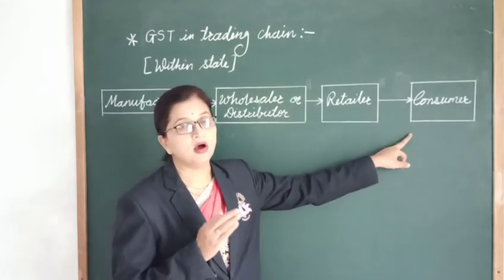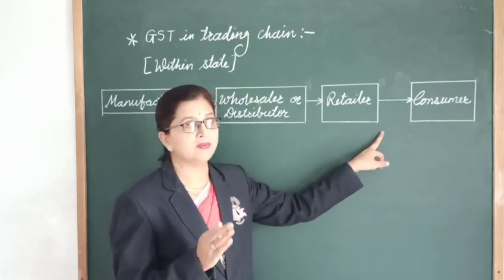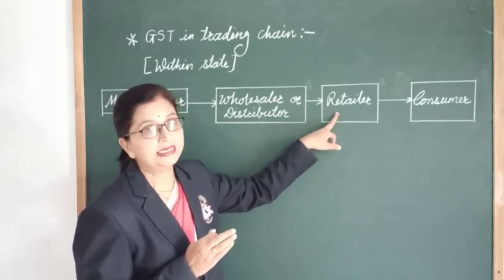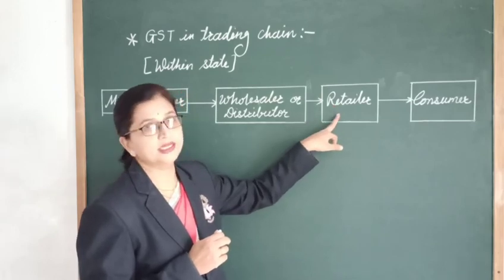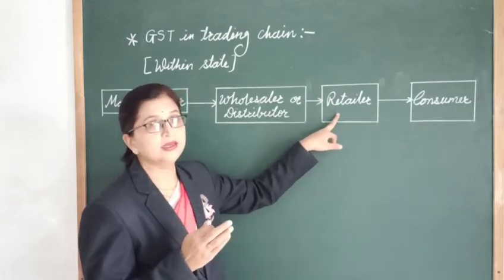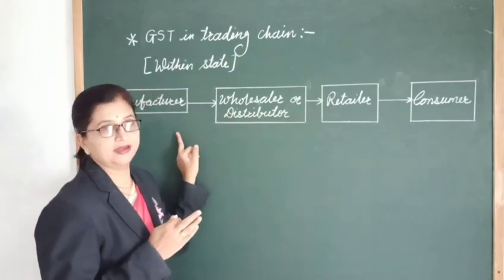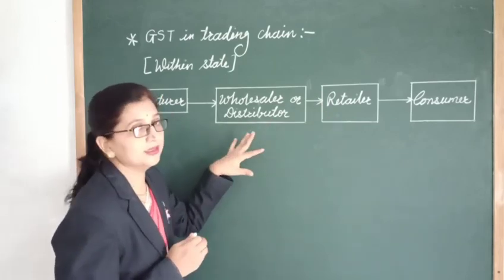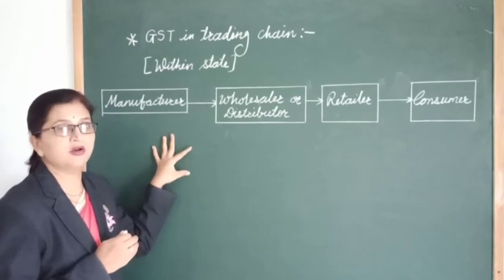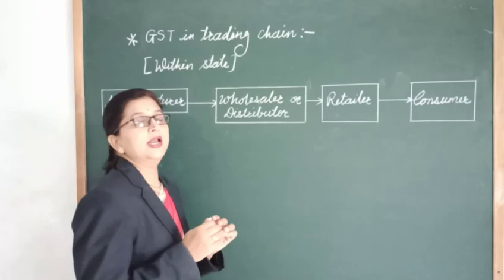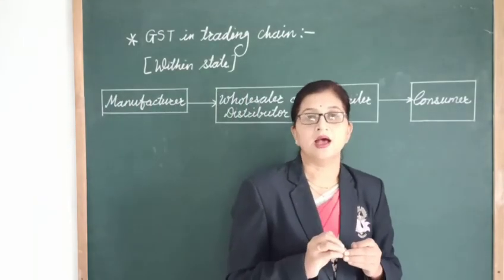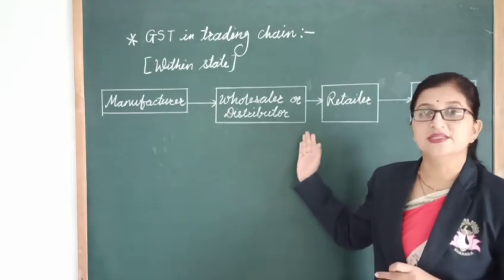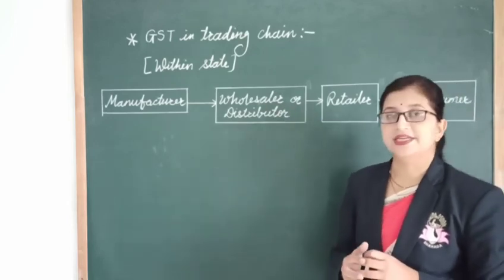We purchase goods from the nearby shop or market — that shopkeeper is the retailer. The retailer does not bring things directly from the factory; he purchases from the wholesaler. The wholesaler brings the goods from the manufacturer. Let's learn how GST is charged and paid to the government at every stage — that is GST in the trading chain.